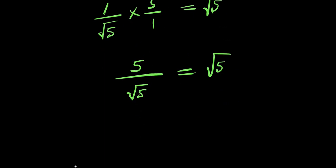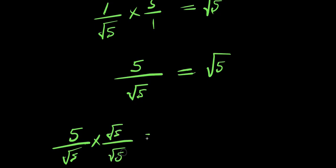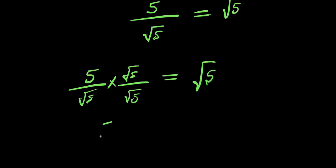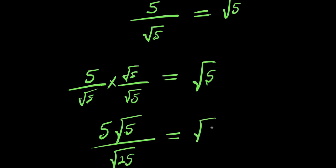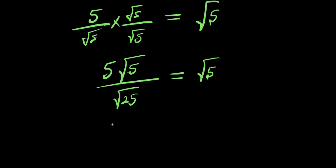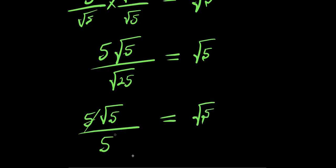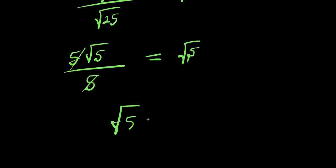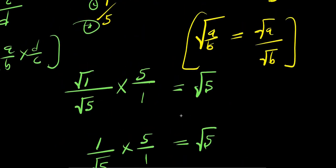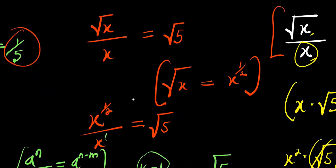We rationalize: 5 divided by square root of 5, times square root of 5 over square root of 5. The numerator is 5 times root 5, and the denominator is root 5 times root 5 equals root 25, which is 5. So we have 5 times root 5 divided by 5 — the 5s cancel — leaving root 5, which equals square root of 5. This confirms x equals 1 over 5 is the correct solution. And that is how you solve this radical problem step by step.